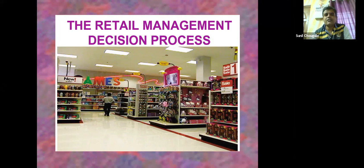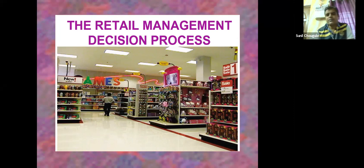These decision-making processes are based on the latest updates, technological changes, and social changes. Retailers in both organized and unorganized sectors make these decisions now. When it comes to retailing, there are two major portions: unorganized retail and organized retail. This basic distinction was already made clear in the previous session.